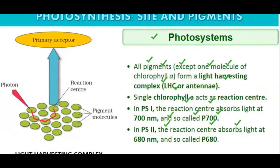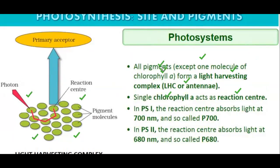In photosystem one, all the pigments except one molecule of chlorophyll a form a light harvesting complex, also called LHC. The LHC absorbs energy from light and channels it for use. The single chlorophyll a molecule acts as the reaction center and is not involved in the LHC. In photosystem one, the reaction center absorbs light at 700 nm and is therefore called P700.